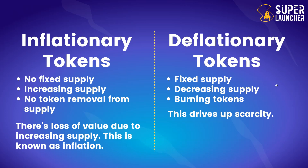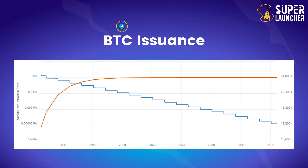You also have deflationary tokens, where there's a fixed supply, decreasing supply, or burning of tokens, which drives up scarcity. As an example, here is a chart showing Bitcoin's issuance. Bitcoin has a maximum supply of 21 million tokens. The current circulating supply of Bitcoin is around 19 million, and you can see that the issuance of Bitcoin will decrease over time.